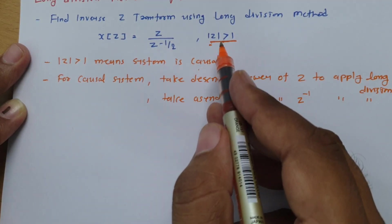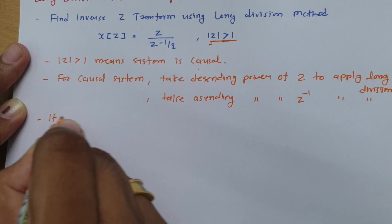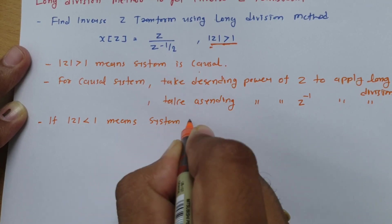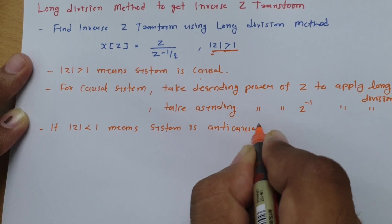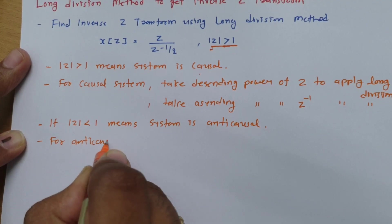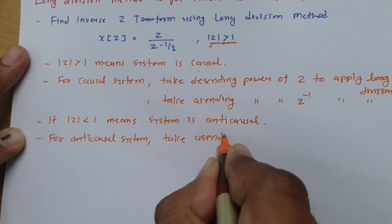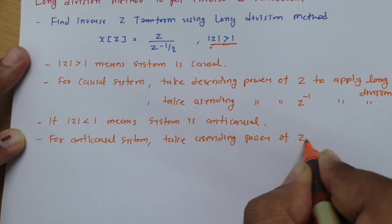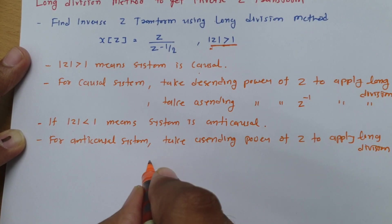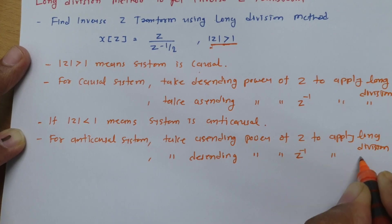Now, if the modulus of Z is less than 1, the system is an anti-causal system. For an anti-causal system, take ascending power of Z to apply long division — or equivalently, take descending power of Z inverse to apply long division.